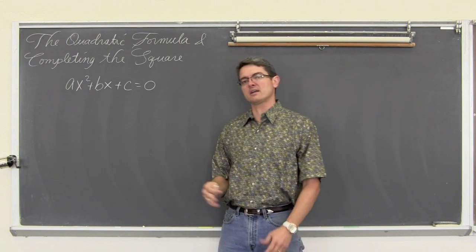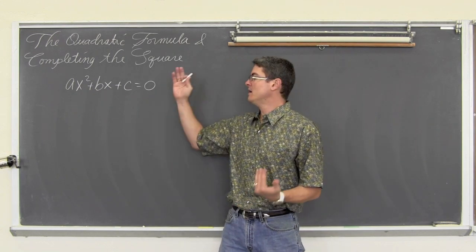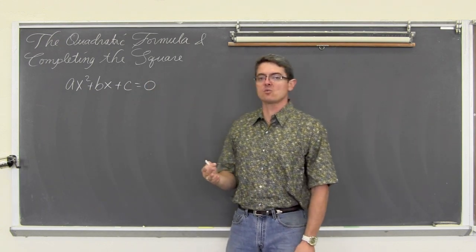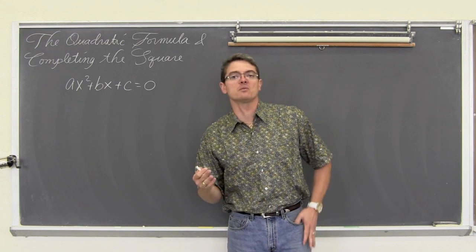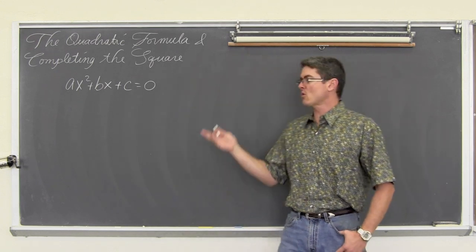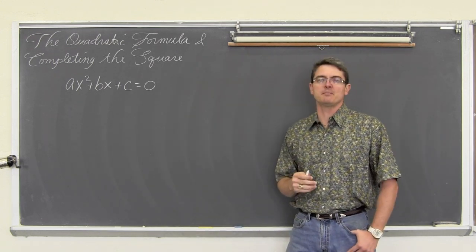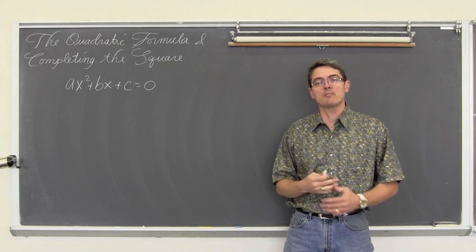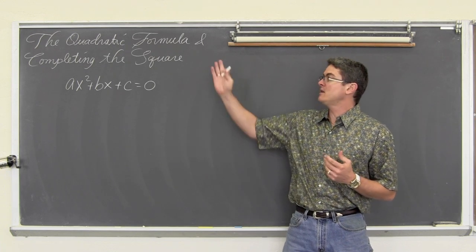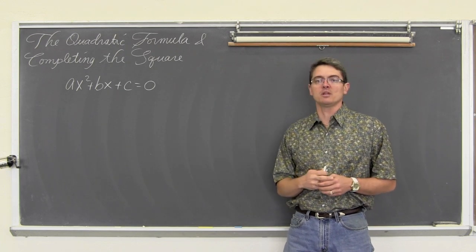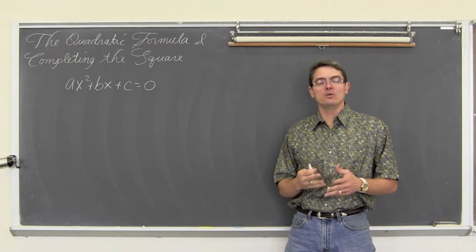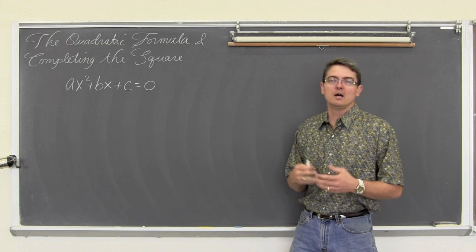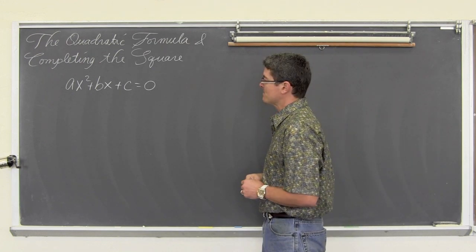Here we have a quadratic in general standard form: ax squared plus bx plus c equals zero. There are no numbers in it, but I am going to use the completing the square process to derive the quadratic formula for you, which we will then use in the next video to actually solve some equations.